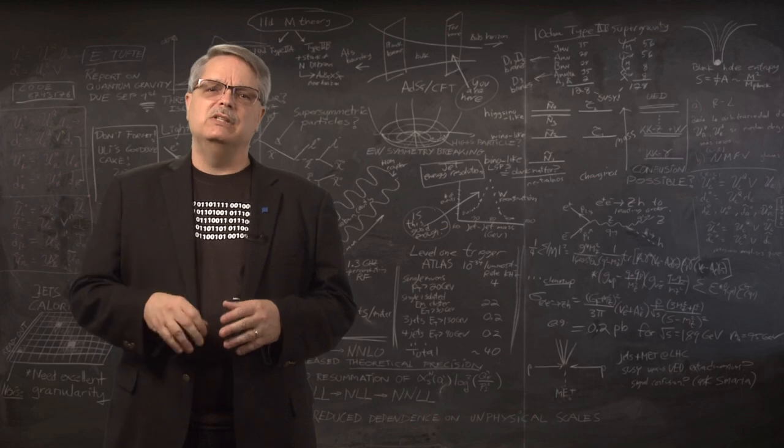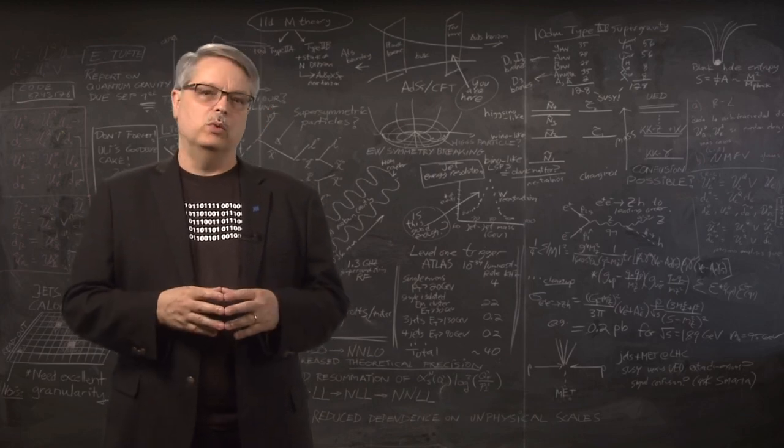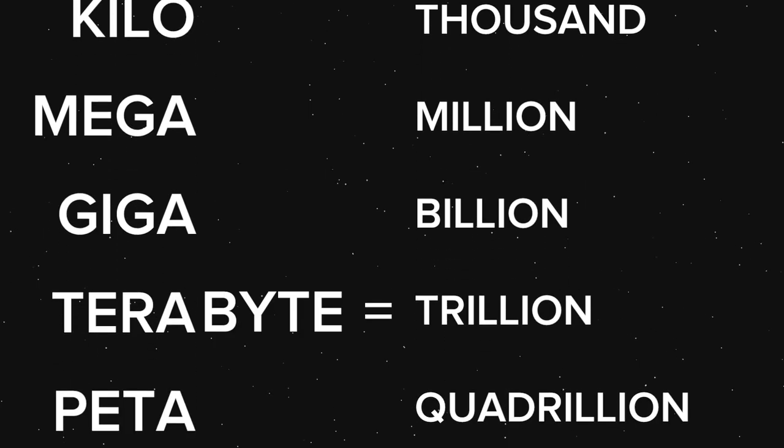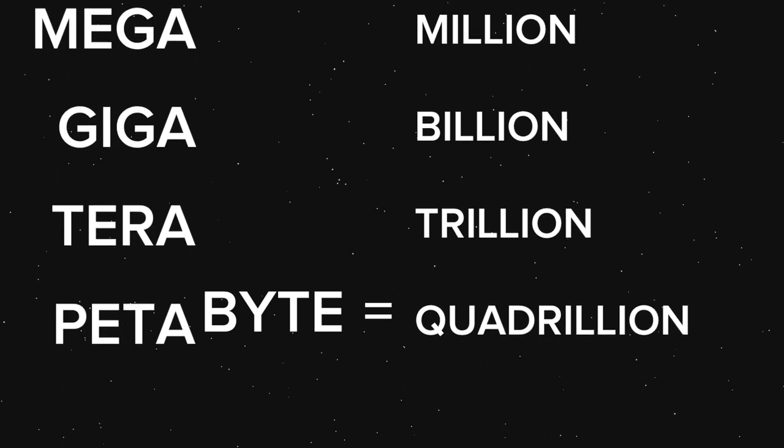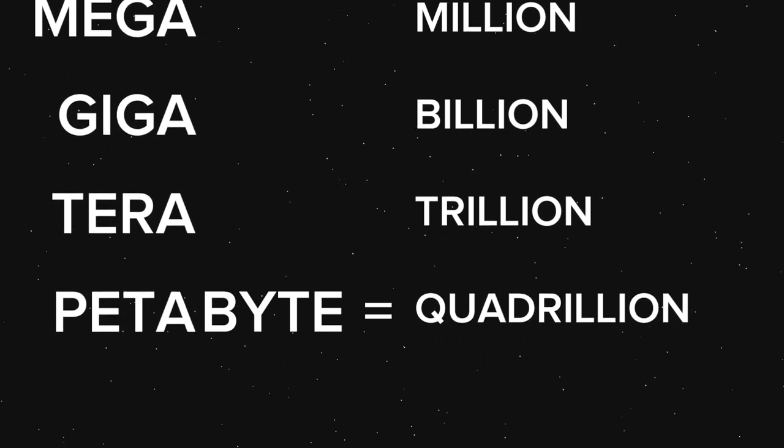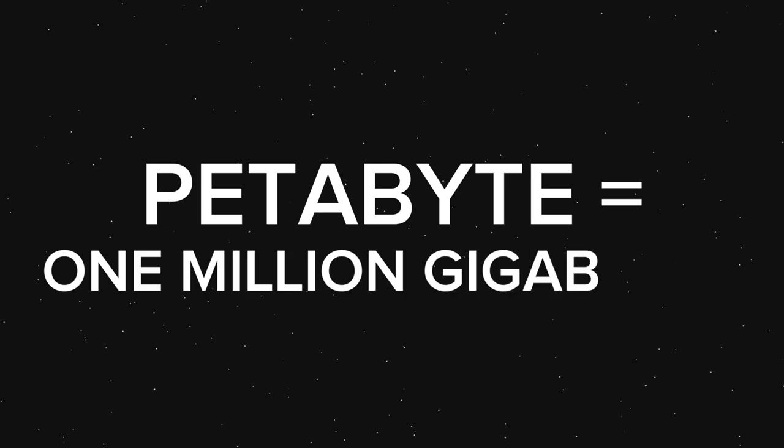However, gigabytes are small potatoes in the LHC world. A terabyte is a trillion bytes, and a petabyte is a quadrillion bytes. In other words, a petabyte is a million gigabytes. And a petabyte is the most relevant unit for the LHC data.